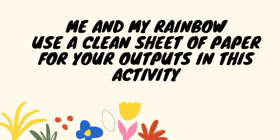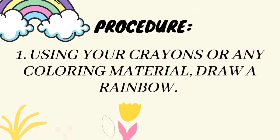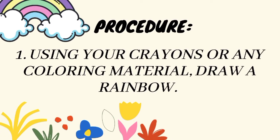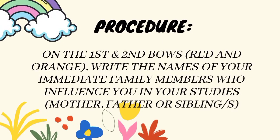Here is our first activity, entitled Me and My Rainbow. I will give you the different procedures in doing this. Number 1: Using your crayons or any coloring material, draw a rainbow. Number 2: On the first and second bows — red and orange — write the names of your immediate family members who influence you in your studies, like your mother, father, sister, or brother.